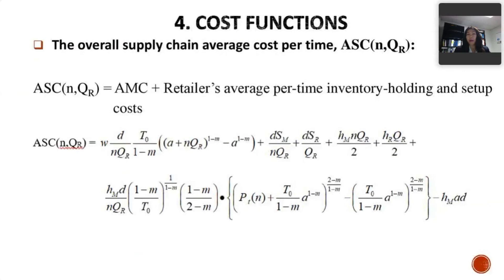But there are manufacturer and retailer, so we look into retailer. Retailer just orders units or places orders with manufacturer. So learning and forgetting does not occur at retailer, and production does not occur at retailer. The retailer cost includes inventory holding cost and setup and ordering cost. Then we combine the average cost per time at retailer and manufacturer. We end up with this cost function.